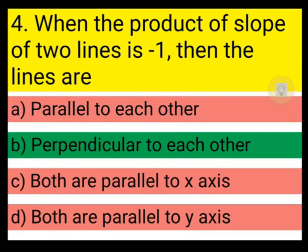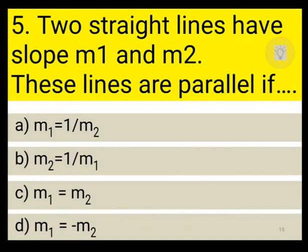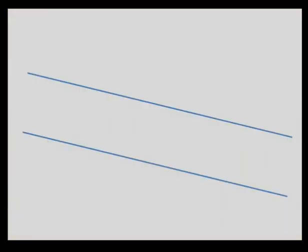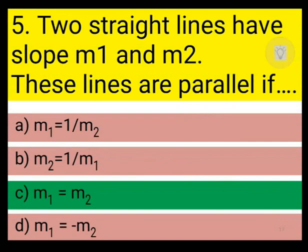Next question: two straight lines have slopes m1 and m2. These lines are parallel if m1·m2 = 1/m2, or m2 = 1/m1 — now these two options are the same, so we can eliminate them — or m1 = m2, or m1 = -m2. The correct answer is c: when two lines are parallel, their slopes are the same, so m1 = m2 is the correct answer.